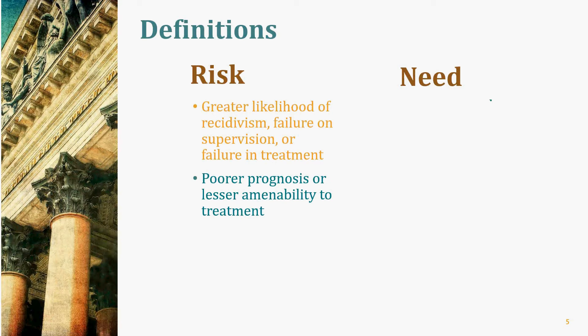Needs are different from risks — they tend to be more dynamic and changeable. They are essentially the clinical disorders or functional impairments that criminal offenders often have that impact their criminal activity. If we think of risk as prognosis, we would think of need as the diagnosis. There is a distinction between criminogenic needs, which are needs that cause crime, and non-criminogenic needs, which are usually the result of crime. The most criminogenic need of all would be substance dependence or addiction.